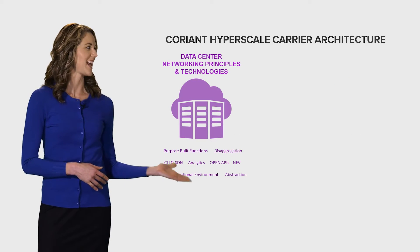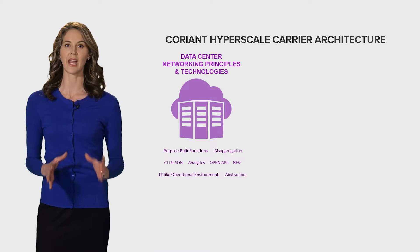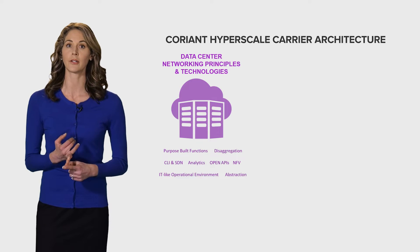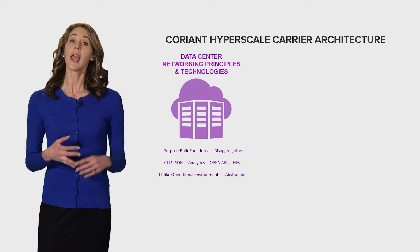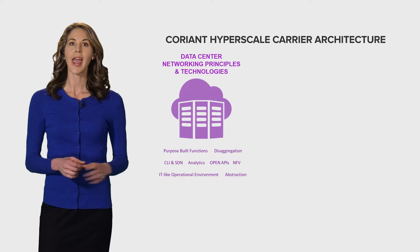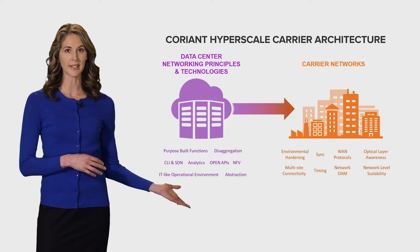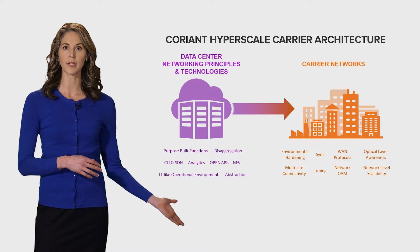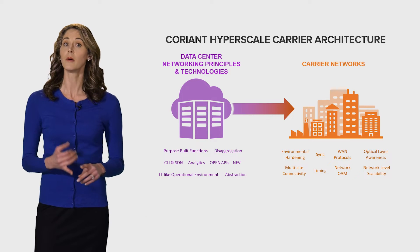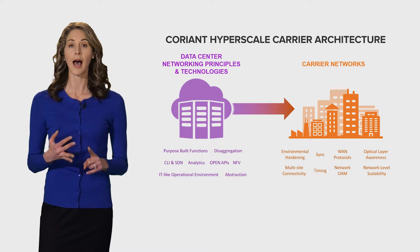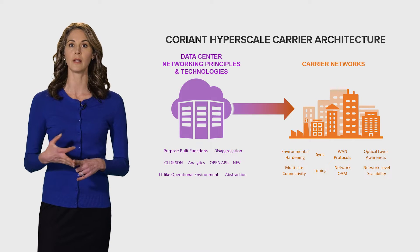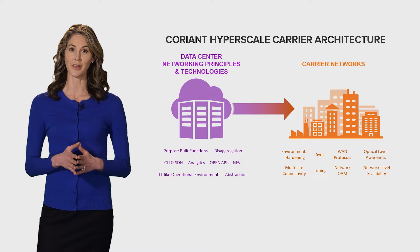The Coriant HCA takes key data center design principles like disaggregation, open APIs, and an IT-like operational environment and combines them with operational characteristics important for carrier networks like multi-site connectivity, optical layer awareness, network level scalability, and WAN protocols.